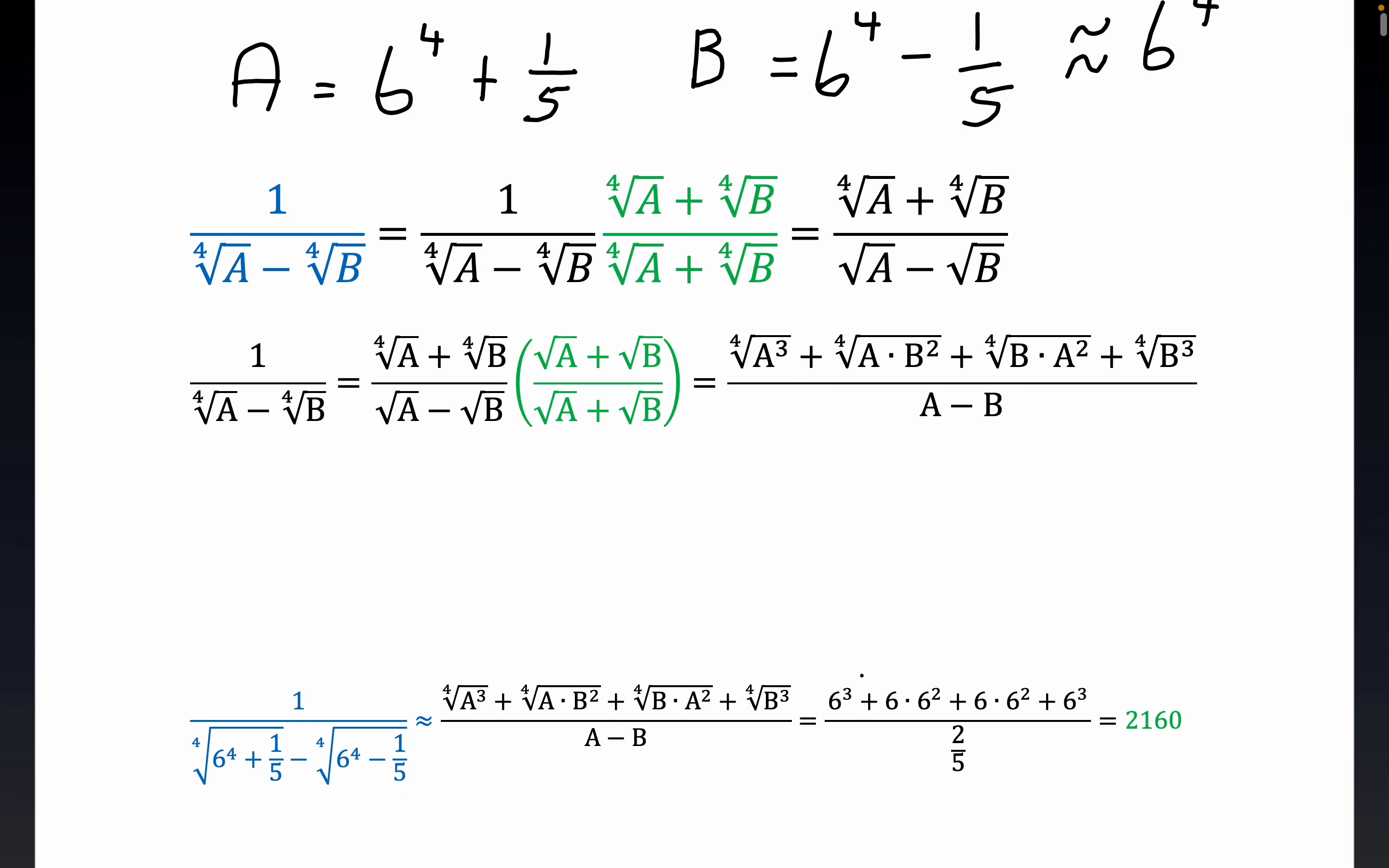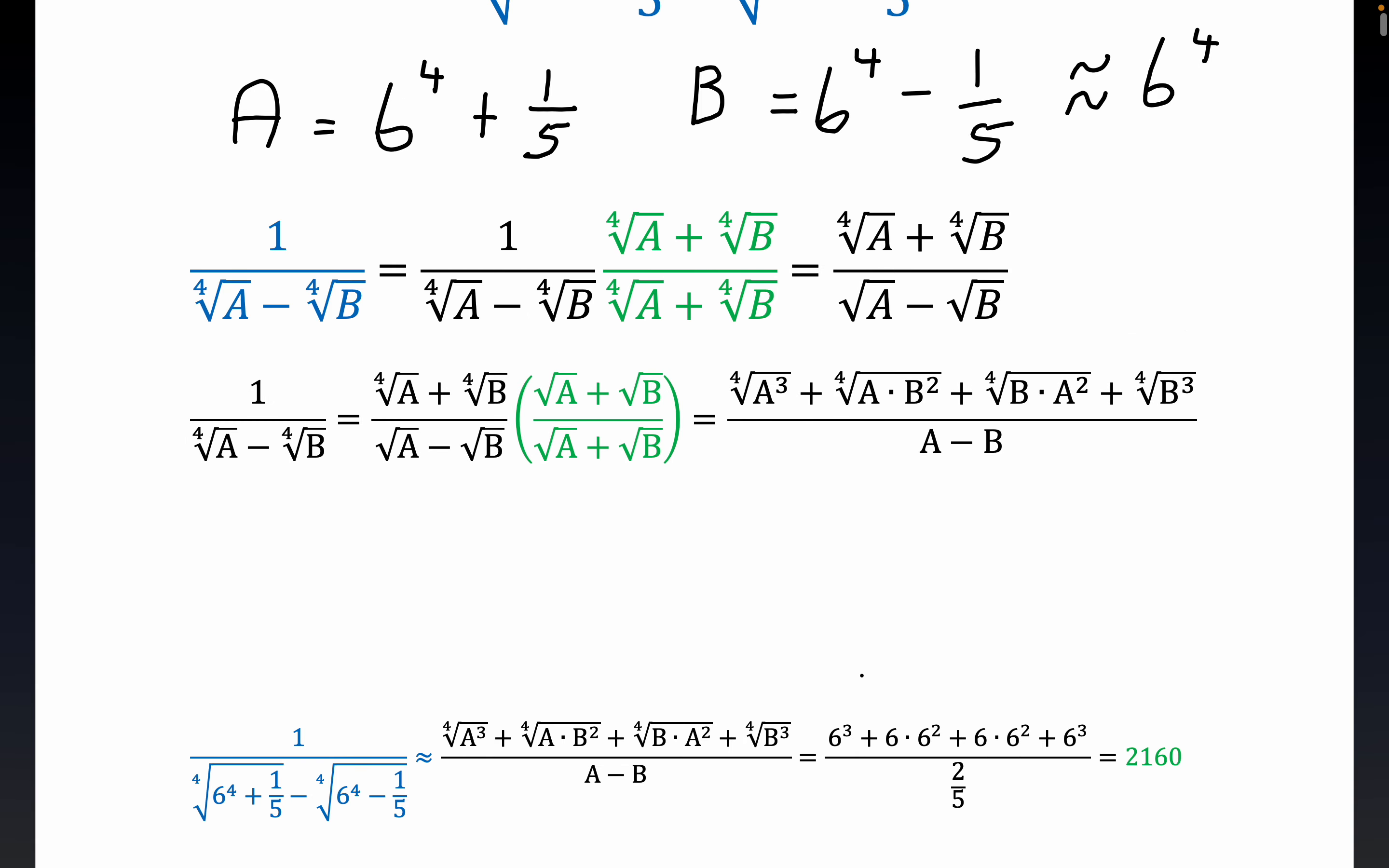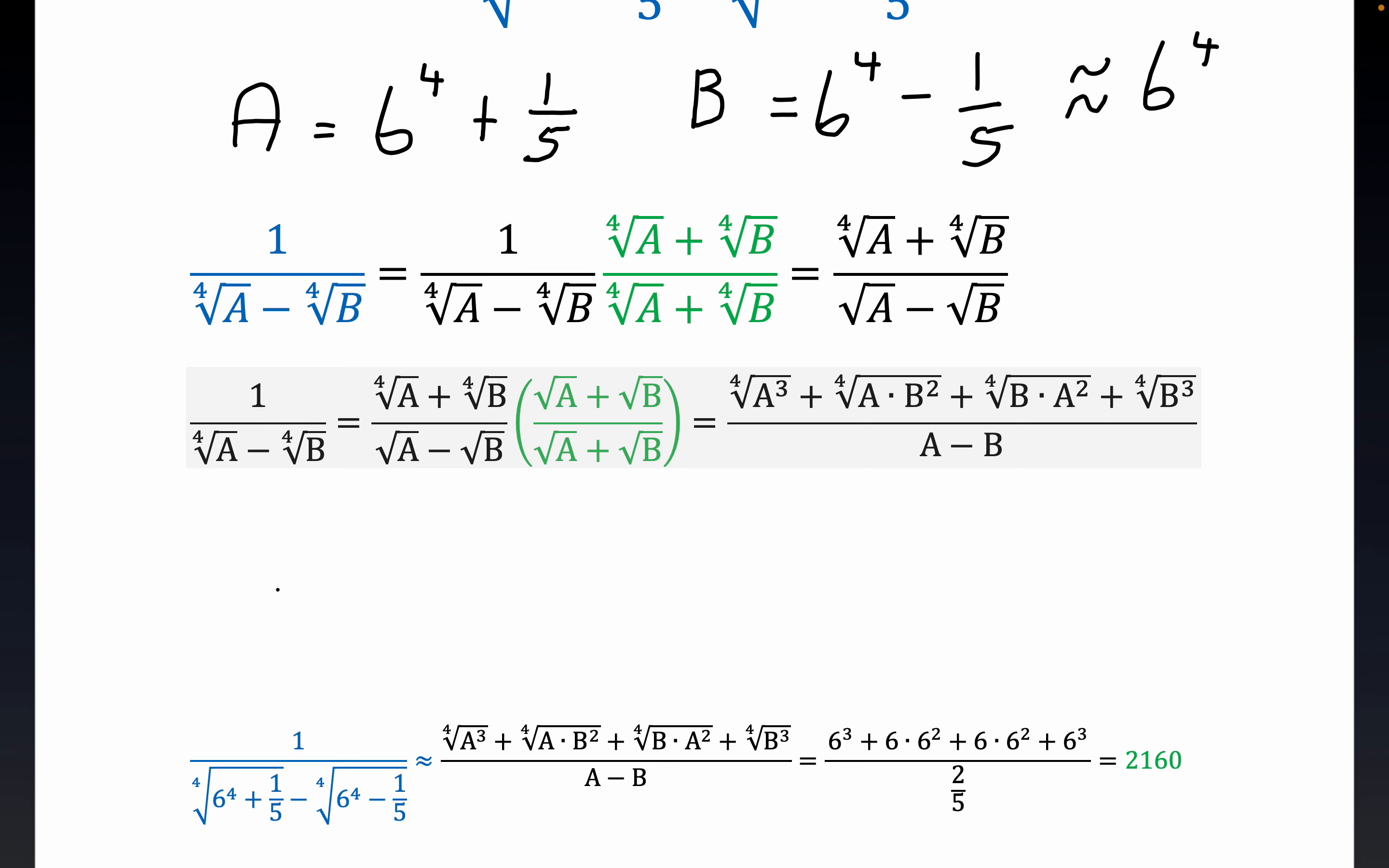Now, so what we're going to do at this point to simplify matters is note that both the fourth root of A, we're going to approximate that by six. That's no surprise. And then also the fourth root of B, we can approximate by six.